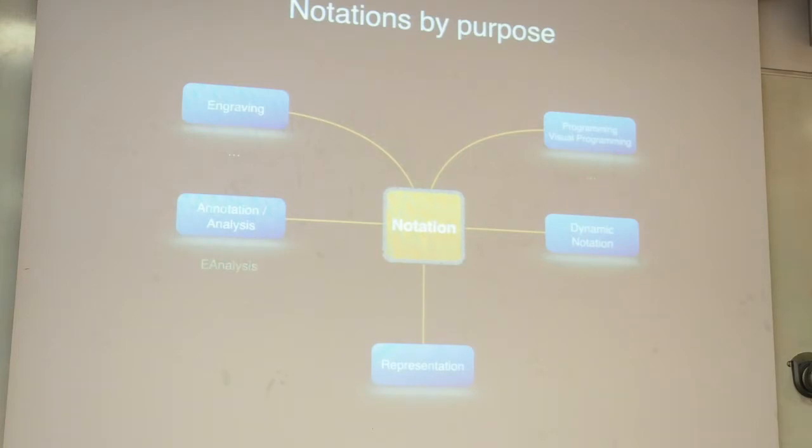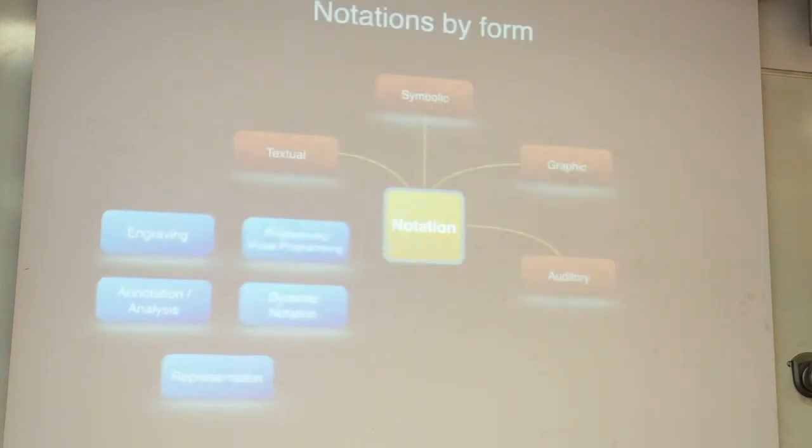On the analysis field, we have E-Analysis or I-Analysis. For dynamic notation, we could put INScore, JMSL, Veecram, etc. The AcousmaGraphe is installed for true representation, for example, like for electroacoustic pieces. We could also consider notation by form: symbolic form, for example, where we get again Sibelius, Finale, PMX. But we could also consider tools for graphic score, where we could add Sonic Visualiser, textual representation—we have numerous textual representations so far—and auditory. I don't have any example.